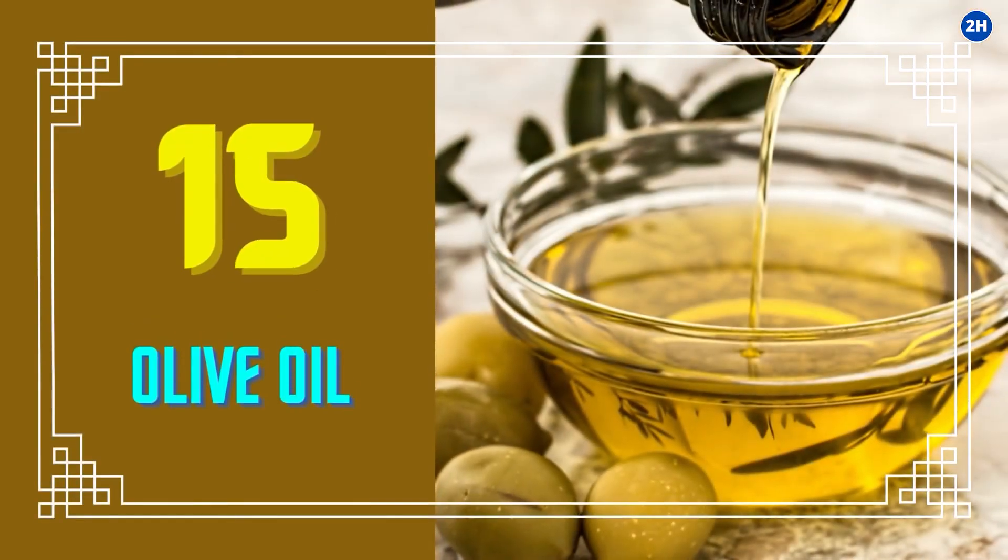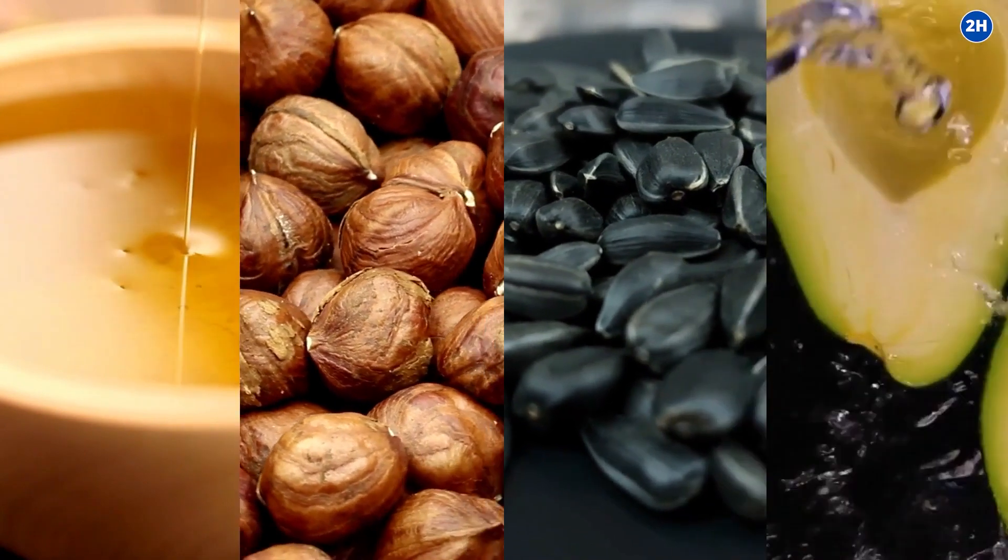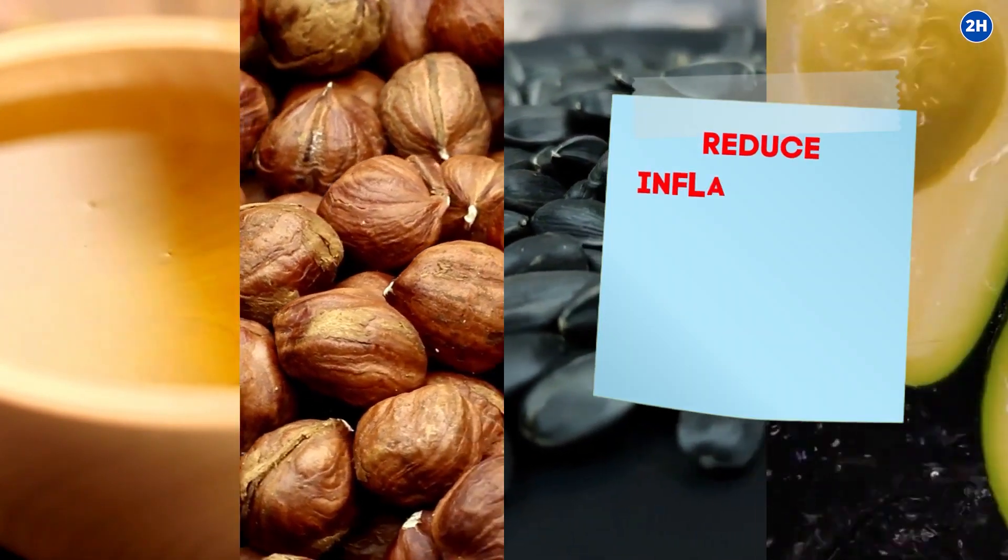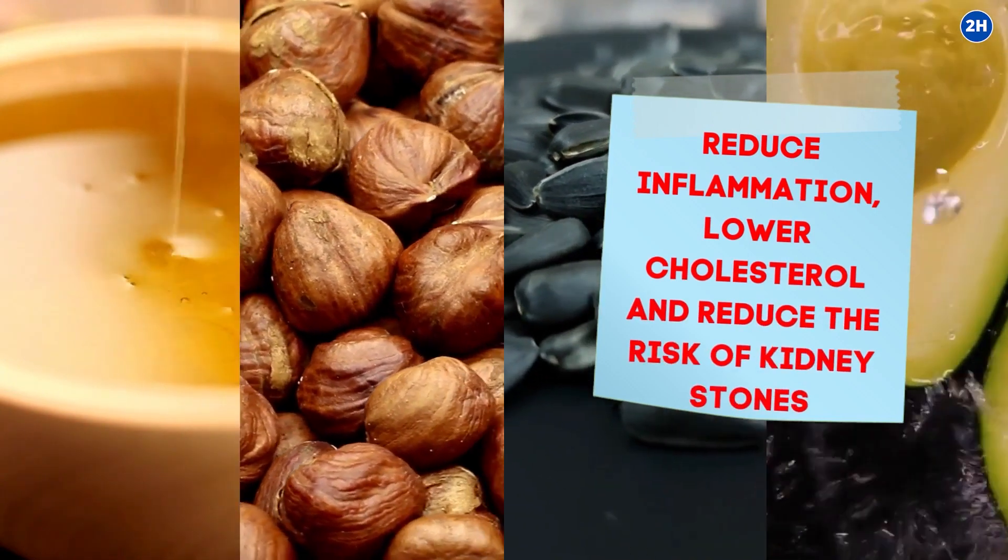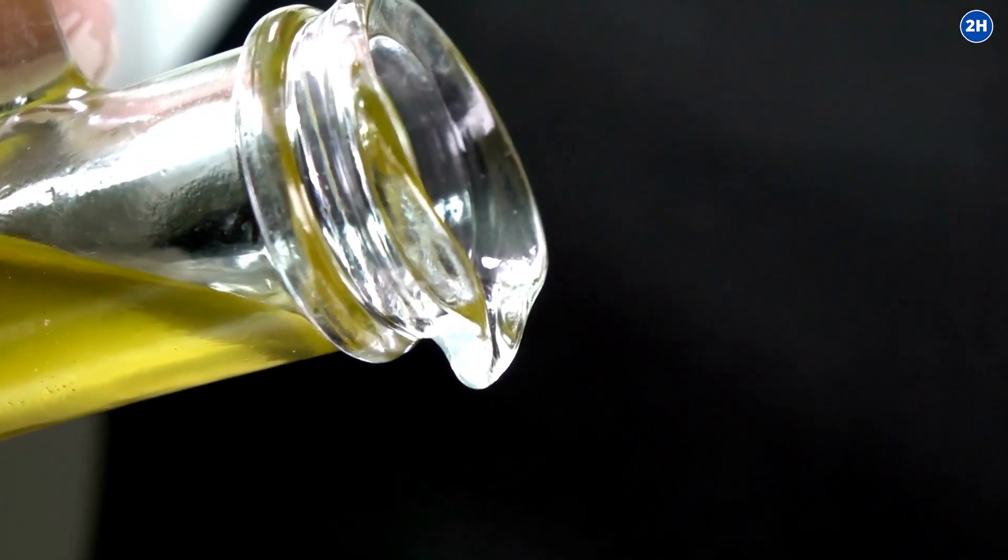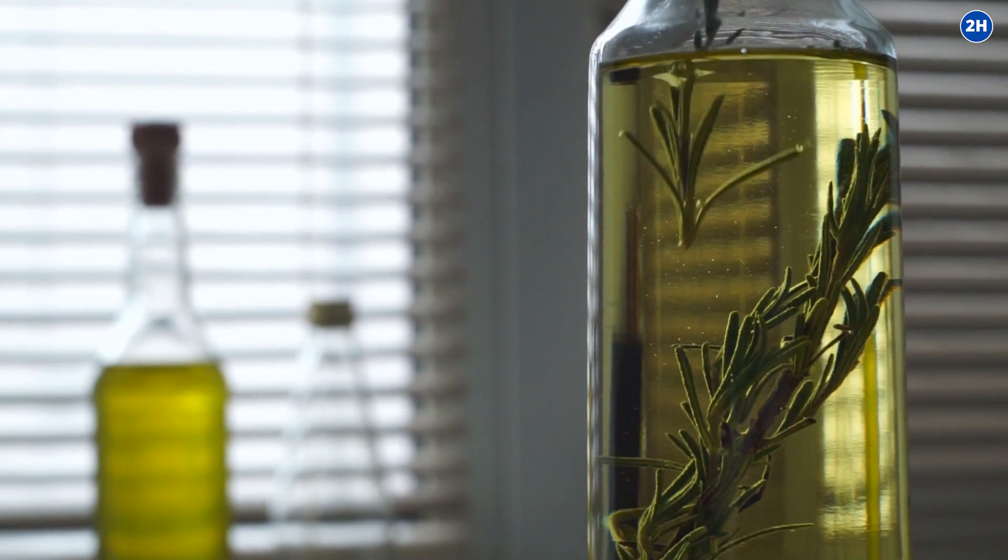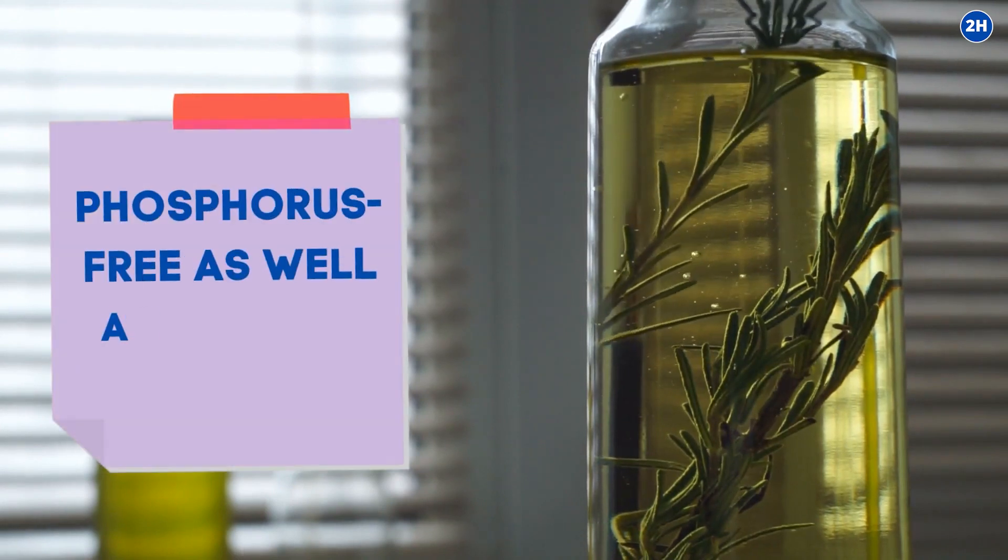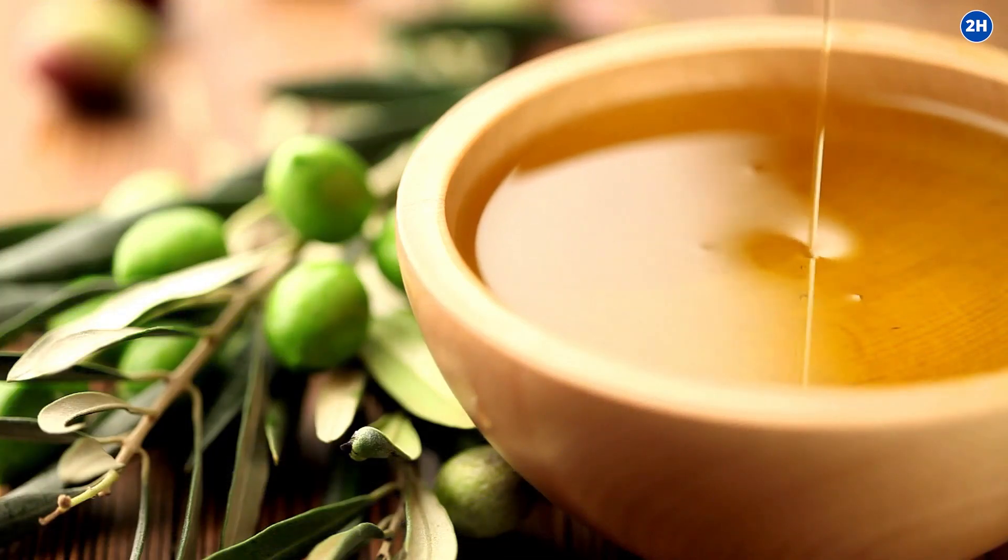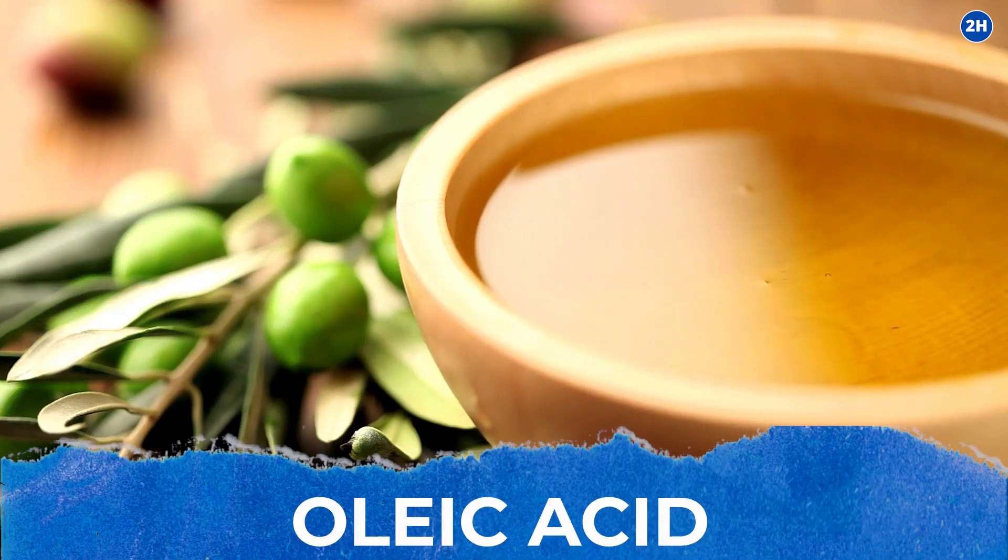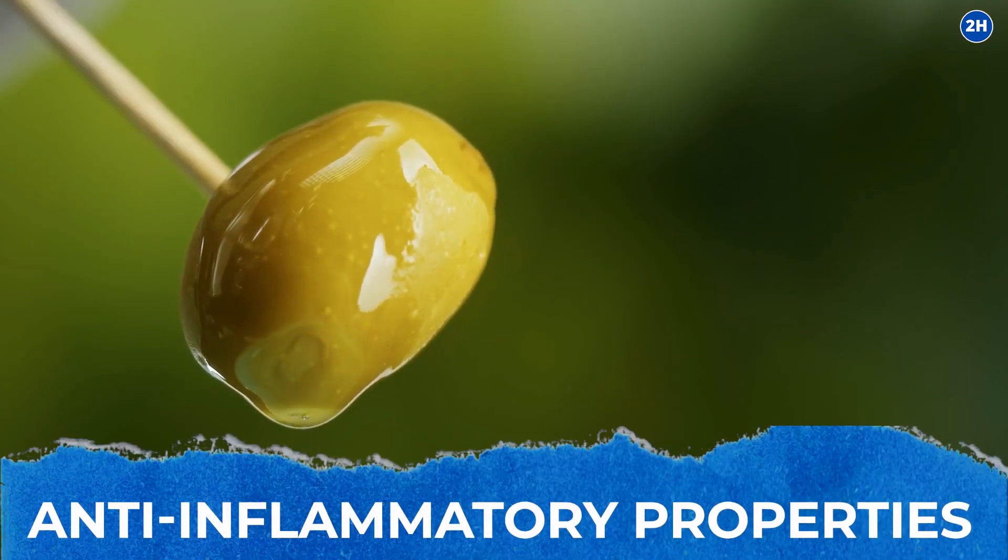15. Olive Oil. The healthy, essential fatty acids in olive oil, nuts, seeds, and avocado reduce inflammation, lower cholesterol, and reduce the risk of kidney stones. Other oils with healthy fatty acids include sacha inchi or moringa oil. Olive oil is a great source of phosphorus-free as well as healthy fatty acids. Most of the fat in olive oil is a monounsaturated fat called oleic acid. Oleic acid is known for its powerful anti-inflammatory properties.